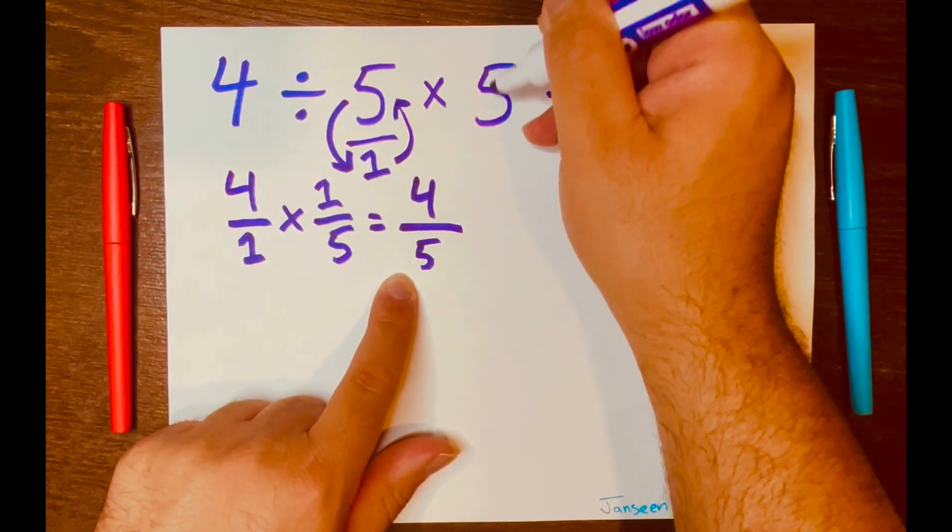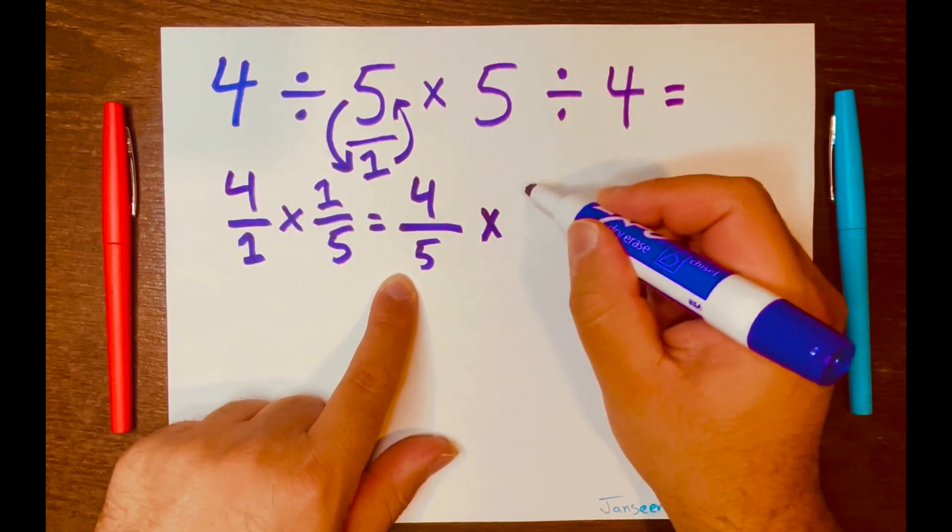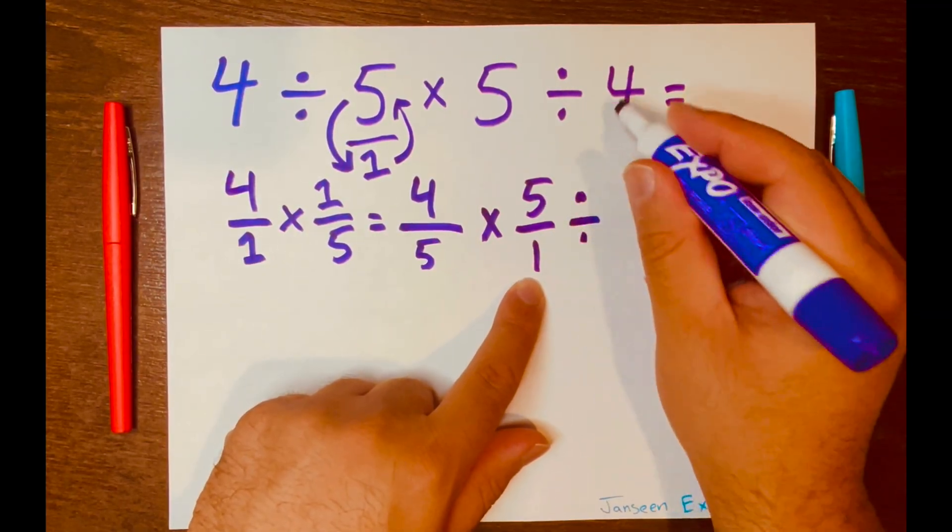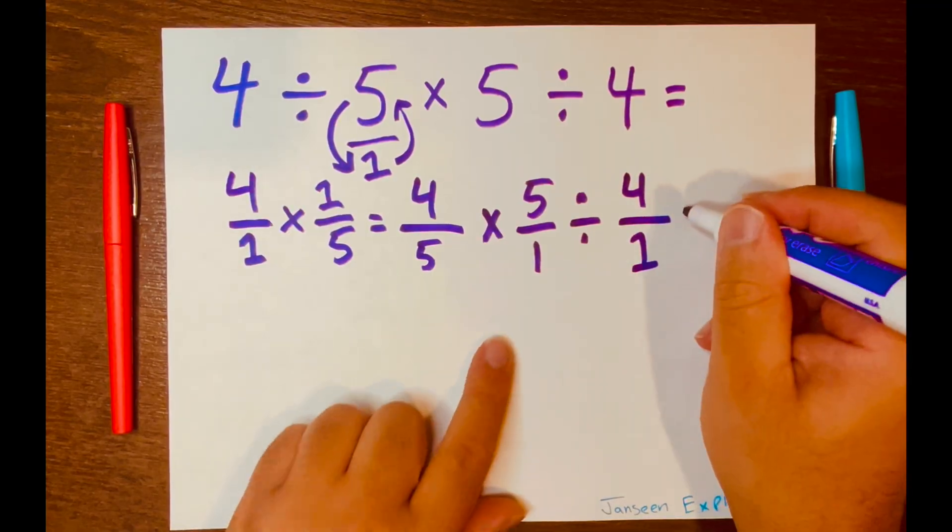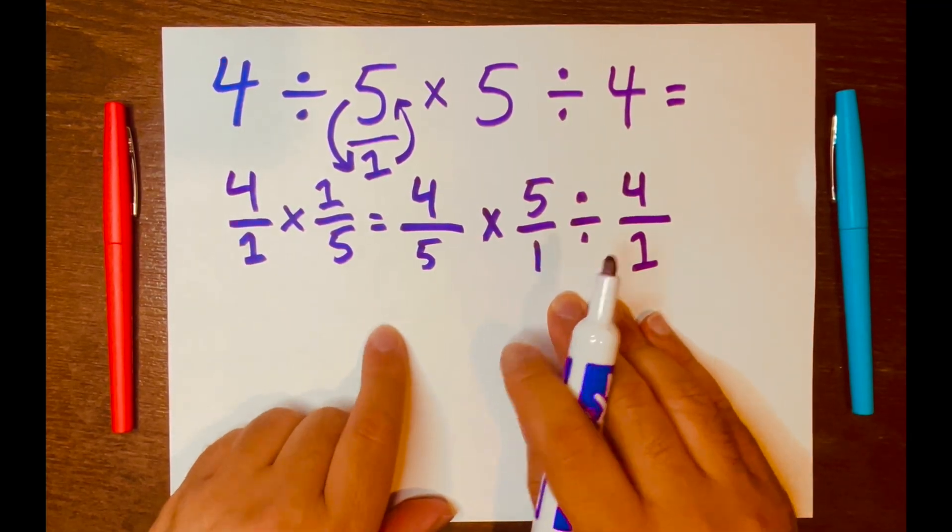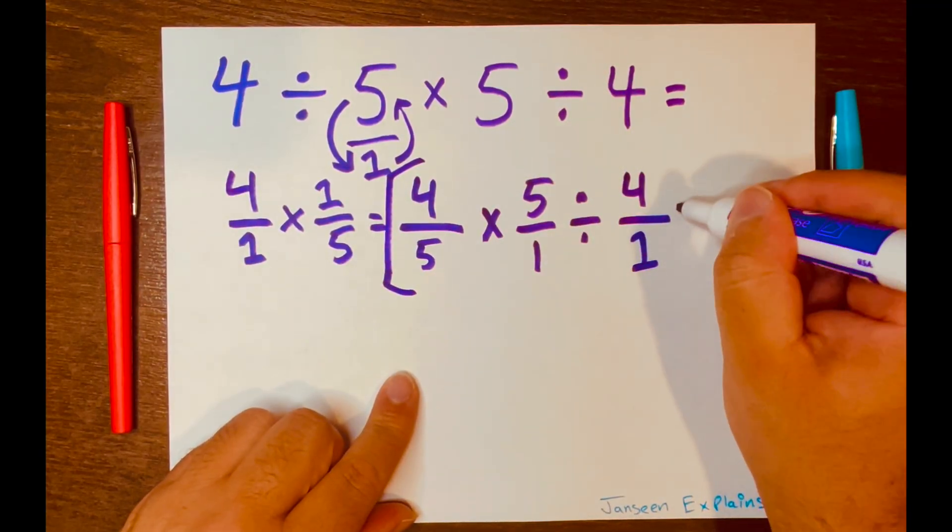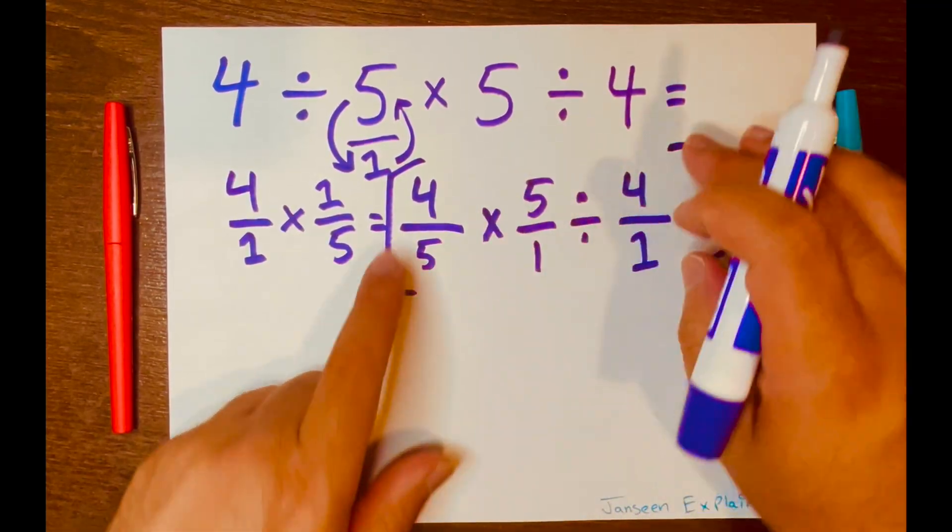Next, let's bring down the times 5. And I also want to turn this into a fraction. So it'll be 5 over 1. Bring down the division symbol down. And then the 4, I'm going to write it into a fraction as well. So it'll be 4 over 1. And now we are looking at this here, looking at what's inside these brackets.